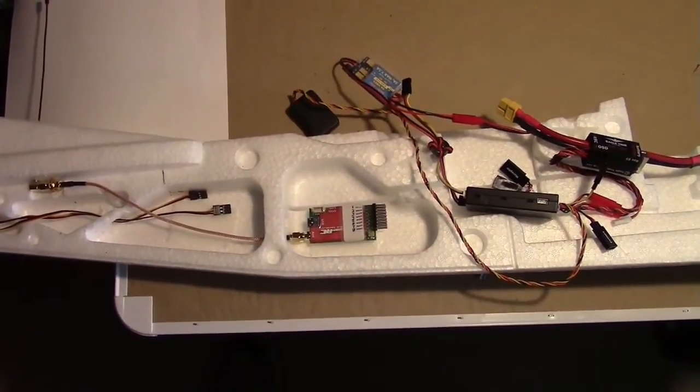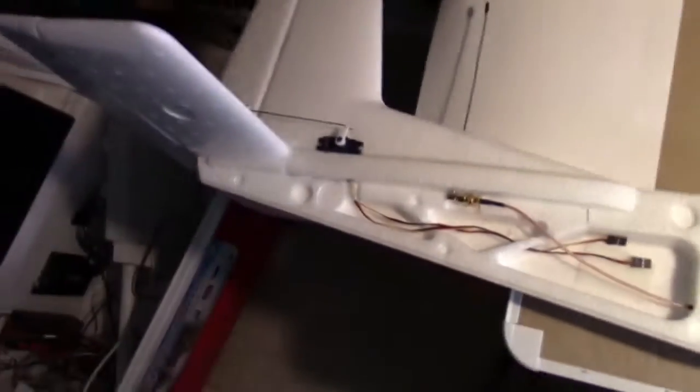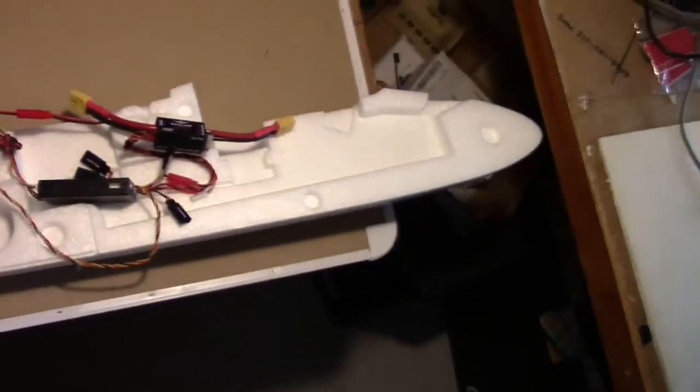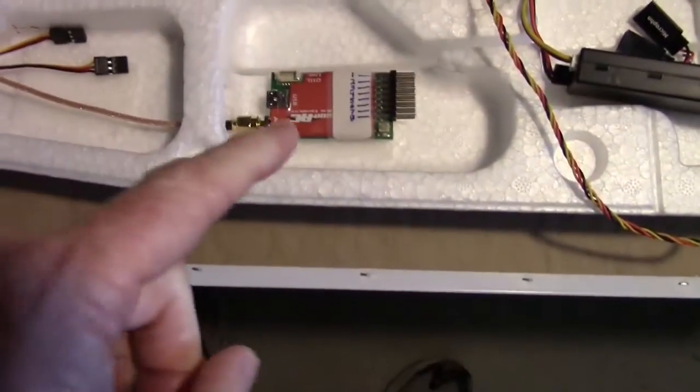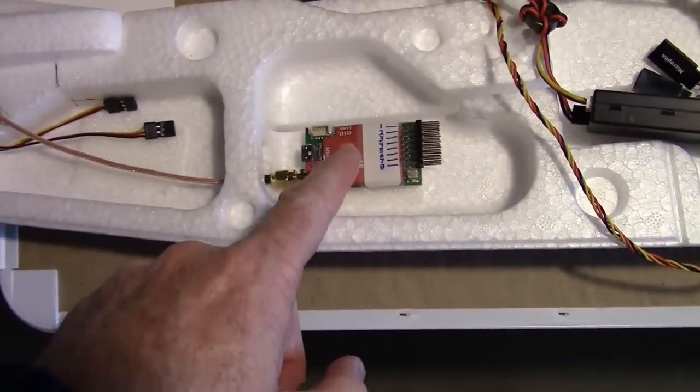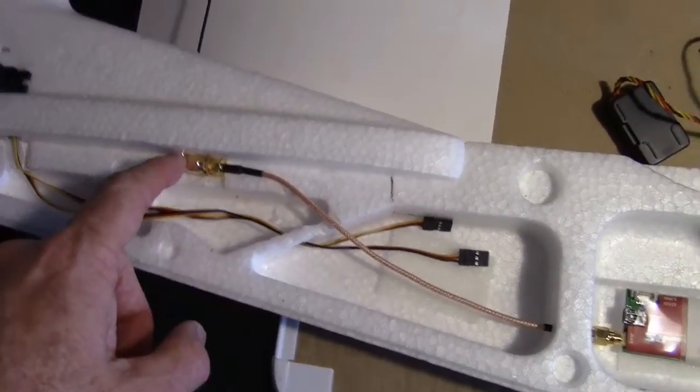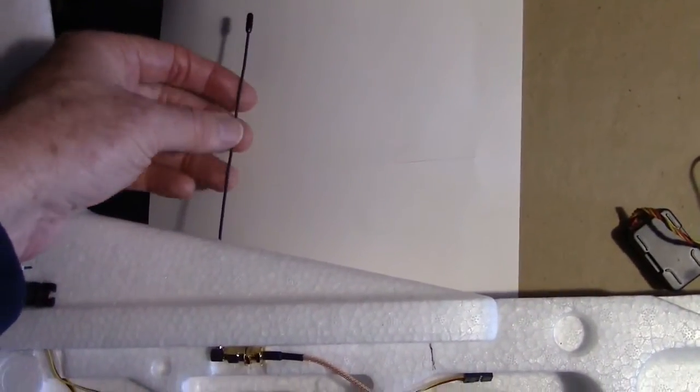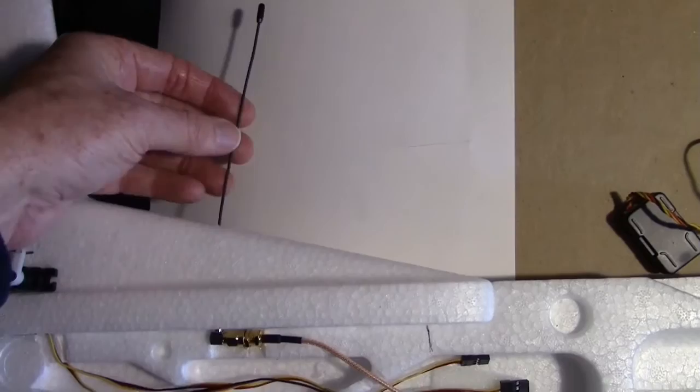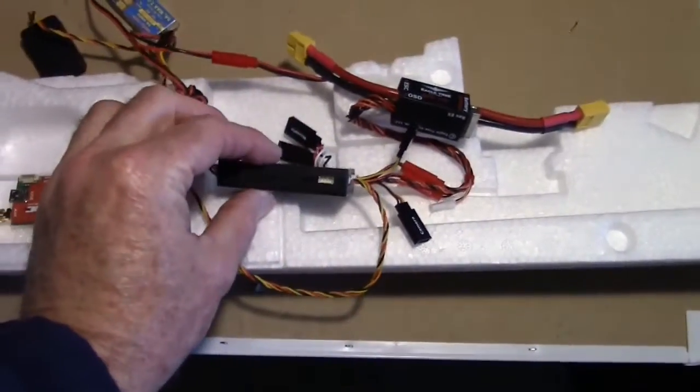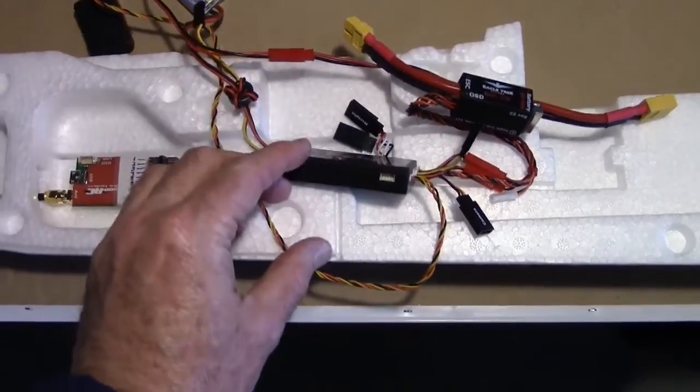As far as component placement, this is what I have so far. I've mounted the EZUHF receiver right here with a 20 centimeter SMA cable that goes back to a 90 degree bend, and then I have my 433 megahertz LRS antenna right here. Up in here, the rest of the components have not been mounted.